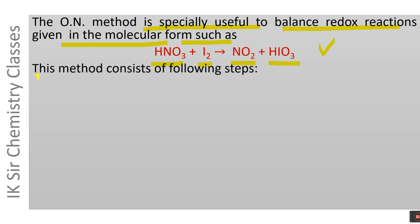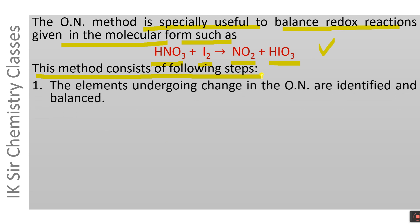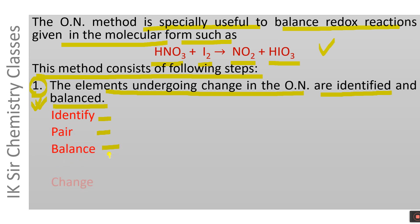The oxidation number method consists of the following steps. In the first step, the elements undergoing change in oxidation number are identified and then balanced. This first step consists of four sub-steps: Identify, Pair, Balance, and Change. These four sub-steps are applied in the same sequence as given here.